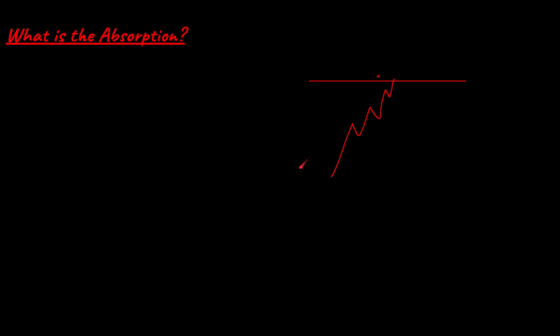Obviously the institutions are stronger than the retail traders, so the retail traders that went long at the high are now trapped — these are trapped buyers. Price will then move quickly against them and dump. That is a way you can confirm your volume profile levels.